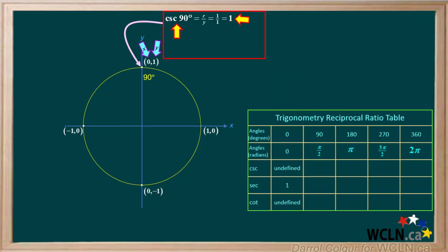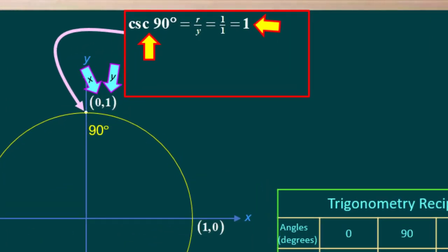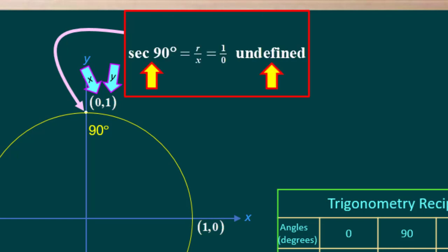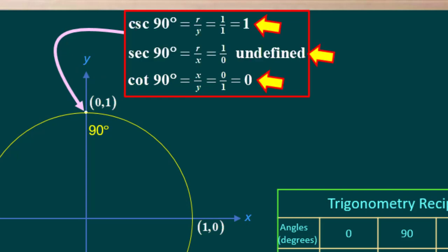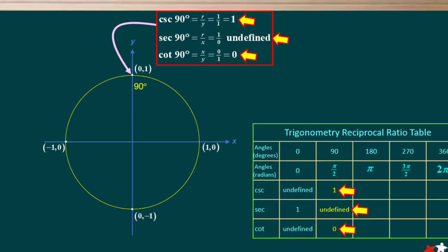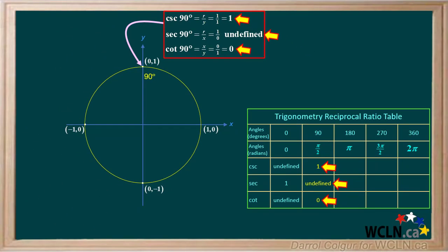Now we'll go to 90 degrees. The cosecant is r over y, or 1 over 1, which is equal to 1. The secant is r over x, which is 1 over 0, and 1 over 0 is undefined. And the cotangent of 90 degrees is x over y, or 0 over 1, which is equal to 0. We'll enter the values for these in our table.